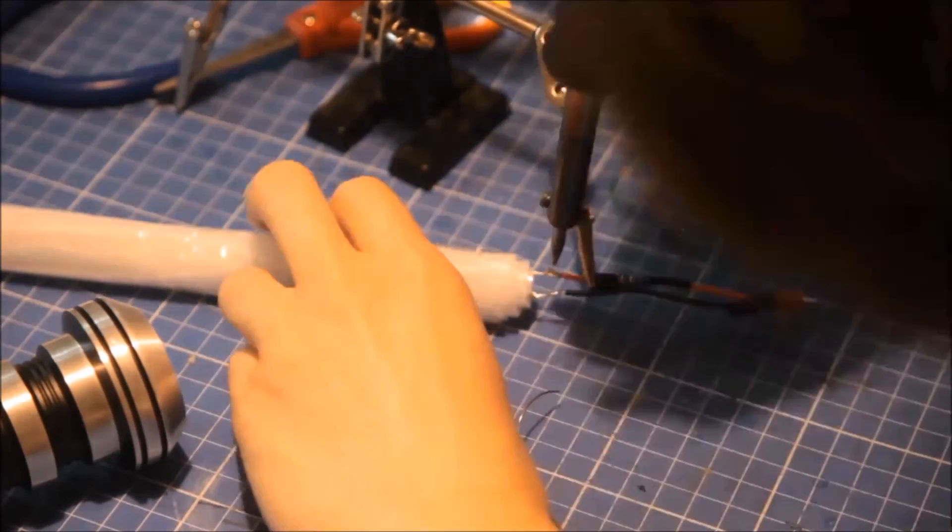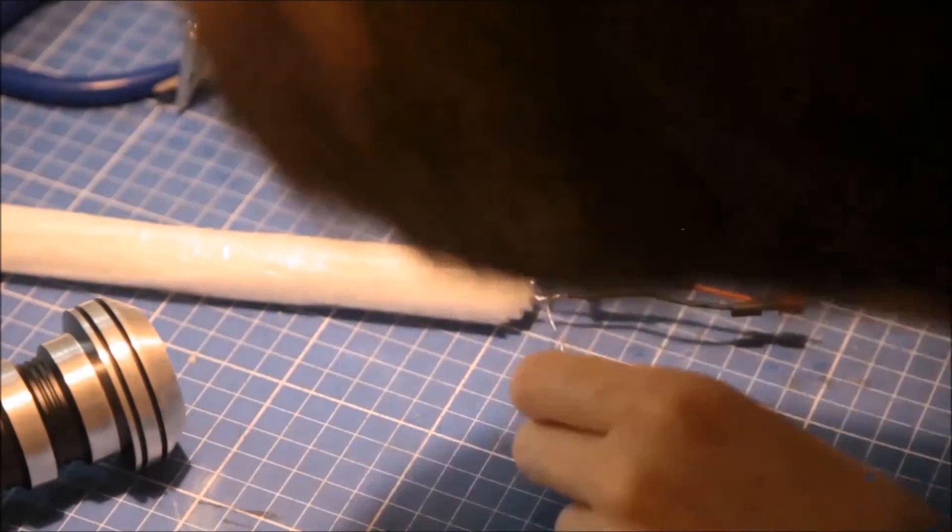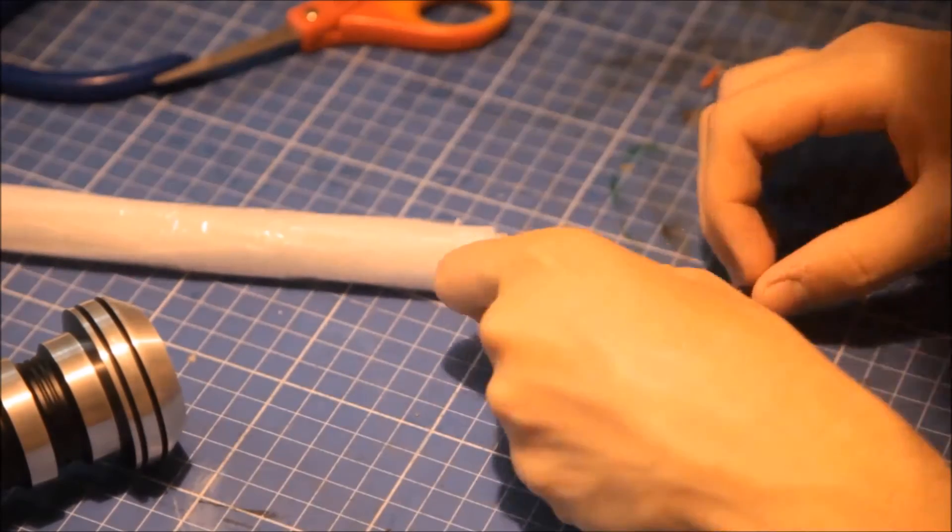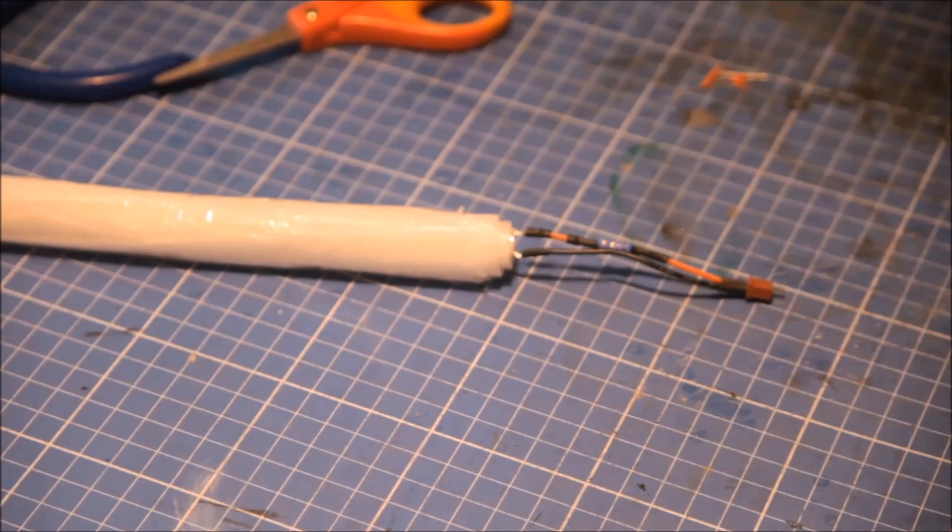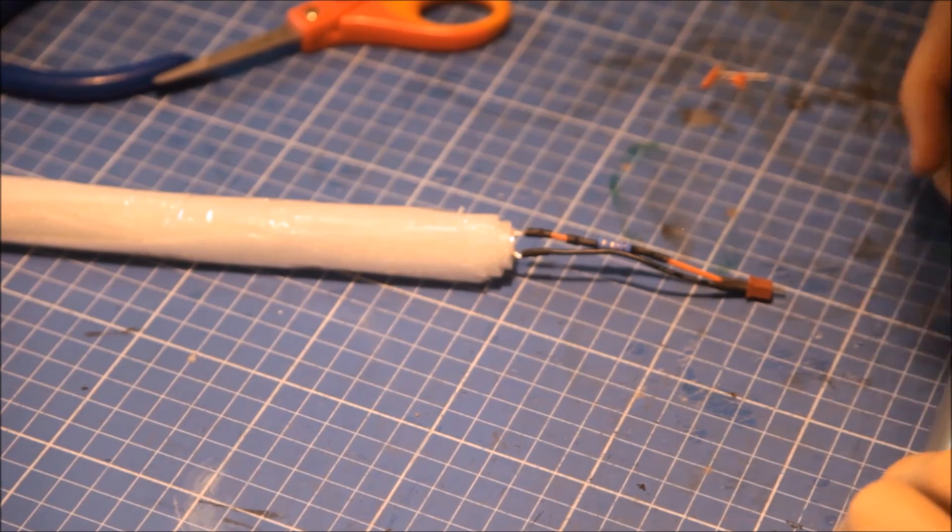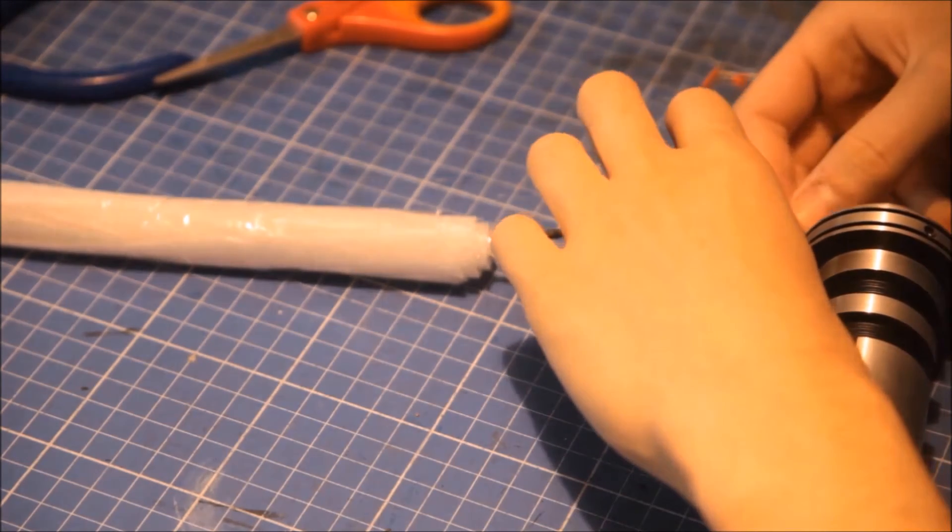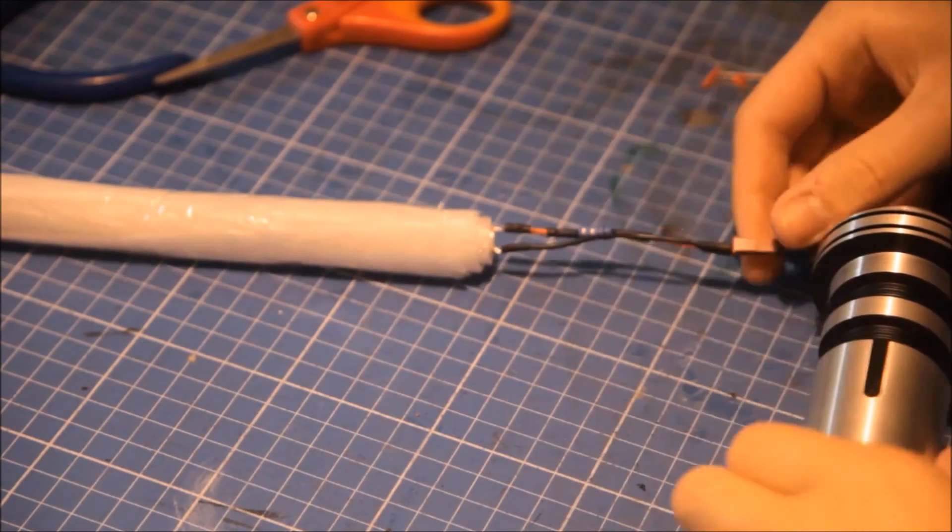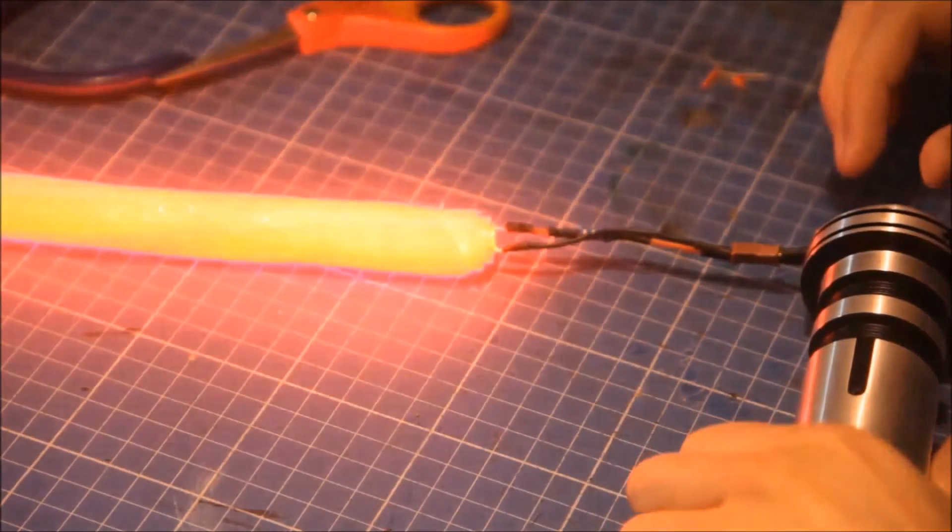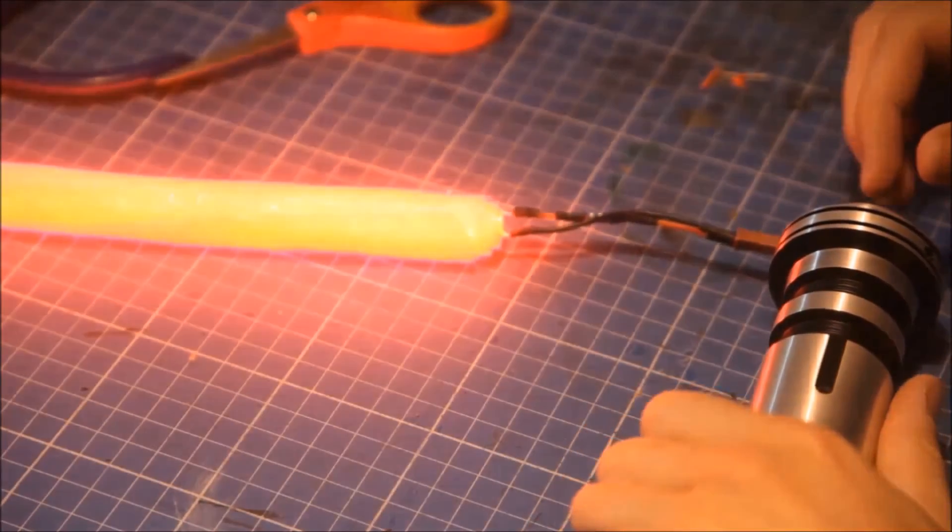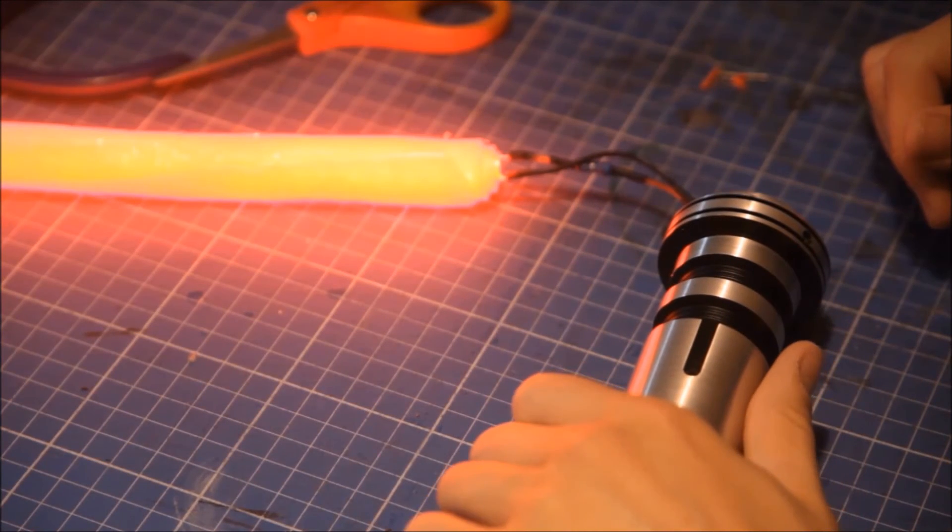Make sure you put heat shrink on everything to keep it all protected, particularly at the end there as that will strengthen that connection there, as that will be under quite a bit of pressure whenever you remove the blade from the lightsaber. And it works! This is always a satisfying moment when you've spent hours and hours on something and it finally works.